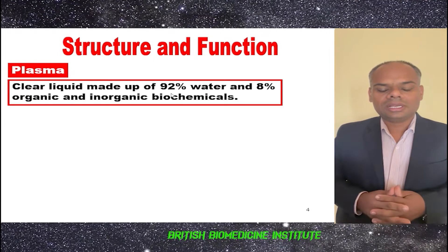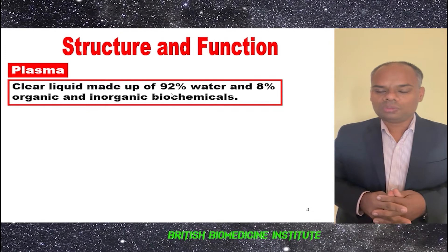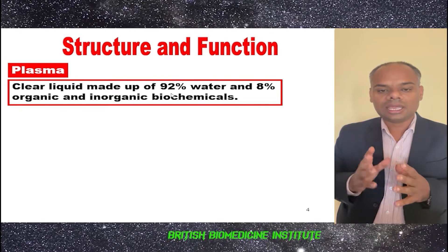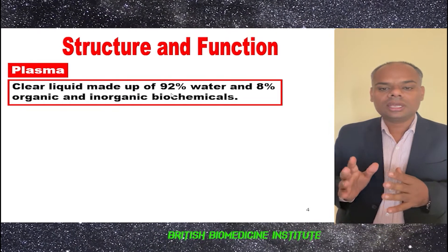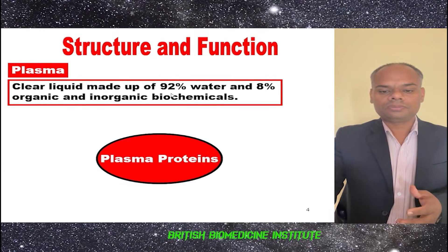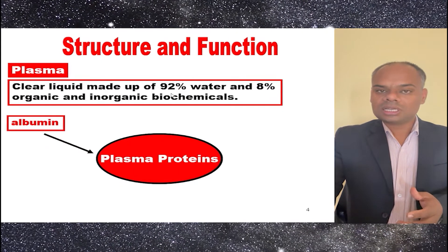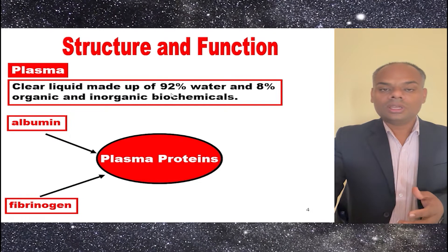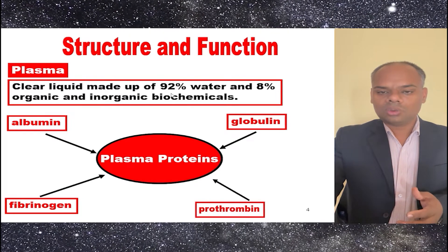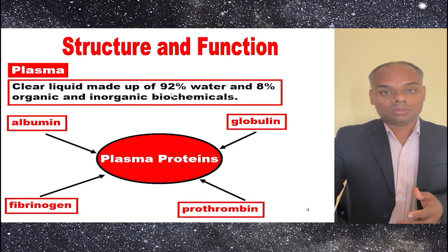Plasma is a clear liquid made up of 92% water and 8% organic and inorganic biochemicals. The plasma proteins consist of albumin, fibrinogen, globulin, and prothrombin.